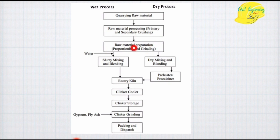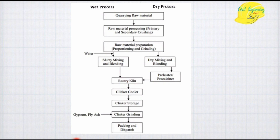In the wet process, water is added to the combined raw materials, forming a slurry. This slurry is then put in a rotary kiln at a very high temperature, fusing to form clinker. The clinker is then cooled, stored, and ground, and during the grinding process gypsum is added to prevent flash setting, producing the final product: cement.